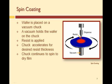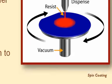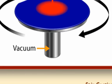The most common method of coating a wafer with resist is spin coating. In the spin coat process, the wafer is placed on a chuck and a vacuum is applied to hold the wafer on the chuck when the chuck is spinning.